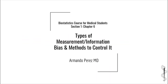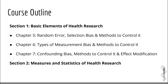Hello everybody and welcome to the MedACE Biostatistics course for medical students. This is Chapter 6 of Section 1. In the last chapter, we talked about two types of study errors: random error and selection bias. We also mentioned some of the techniques used in research to decrease the risk of these errors. In this chapter, we are going to talk about the next major group of bias — the information bias, which is also known as the measurement bias.